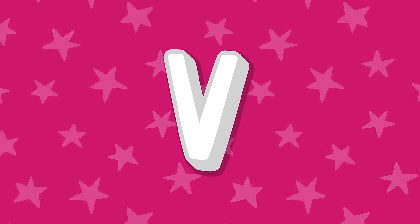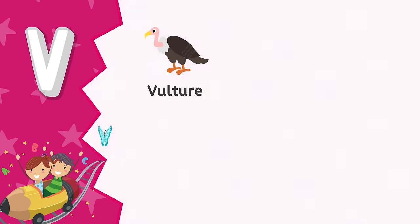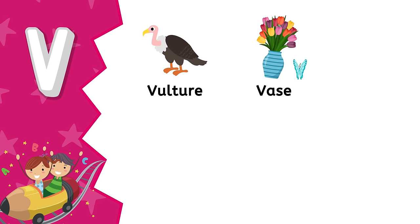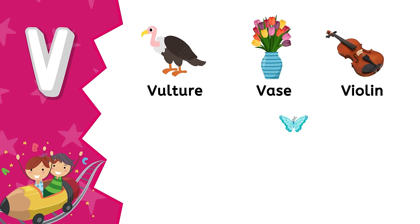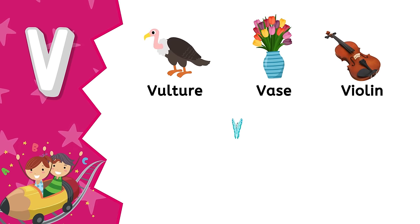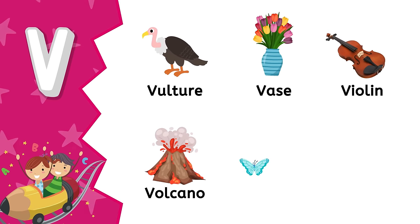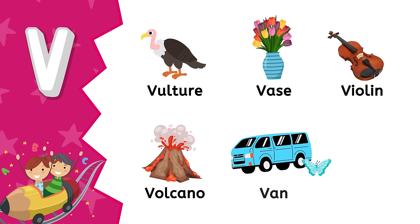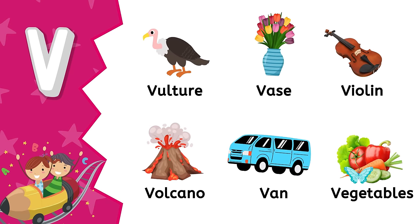V. V is for vulture. V is for vase. V is for violin. V is for volcano. V is for van. V is for vegetables.